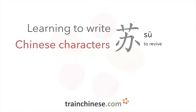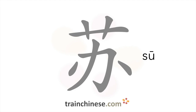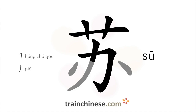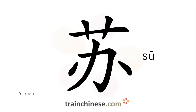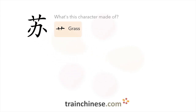Have you seen this character before? It's written with seven strokes. Let's look at how this character breaks down. There's the grass radical in this character.